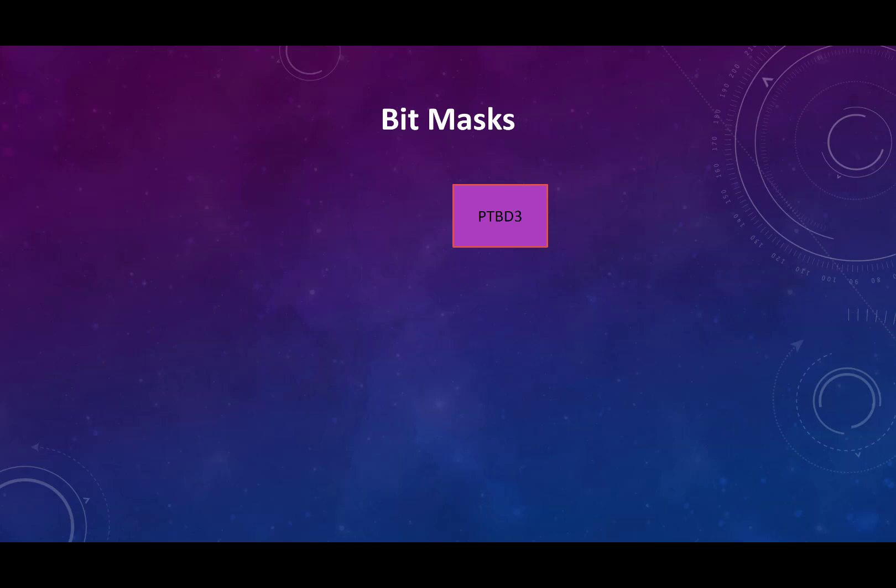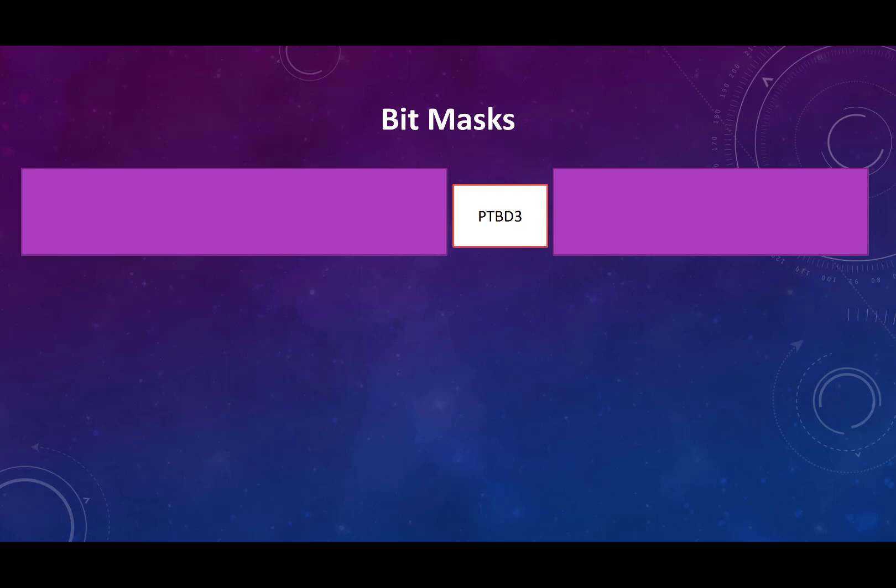Instead of throwing them away, how about we cover them up? We just put a piece of masking tape over top of them — we can't see them because we've covered them up. That is what we call masking, and that's where we get the name mask. When we talk about bit masking, I'm talking about covering up or throwing away some of the bits.